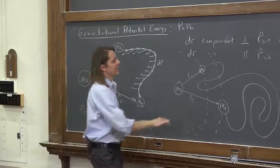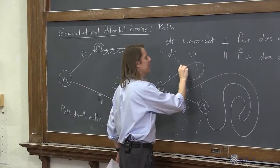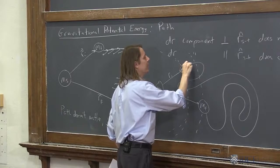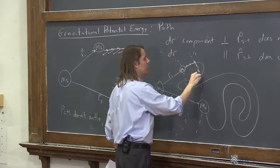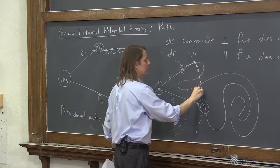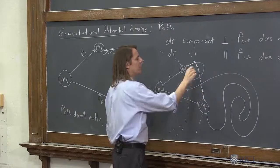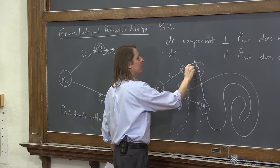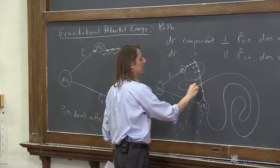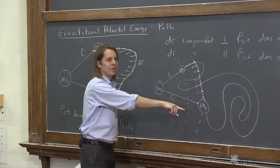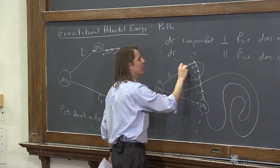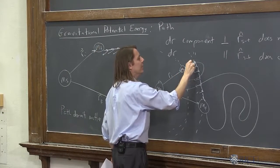And you can realize that since the path doesn't matter, all you really have to do is calculate this path. Go straight from ri to rf. And then walk along the circle. When you're walking along the circle, the f's are always perpendicular. So the walk along the circle contributes nothing.